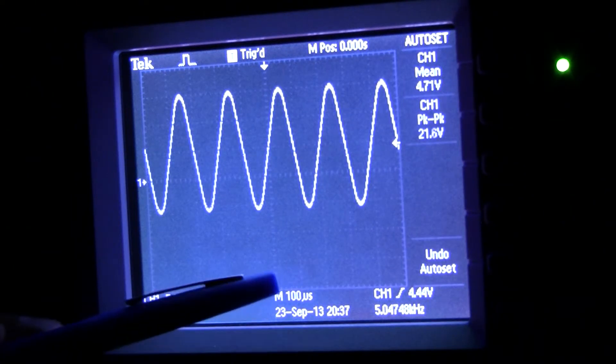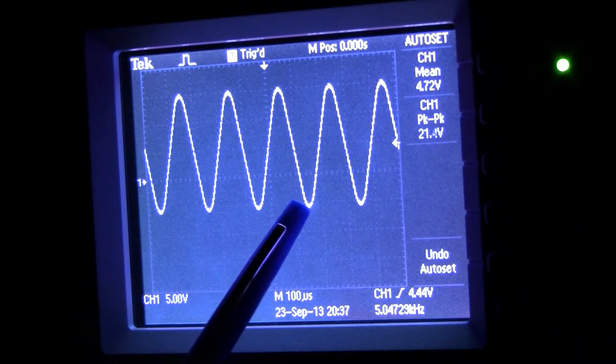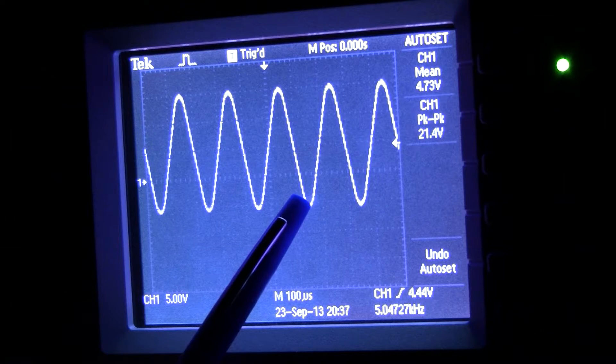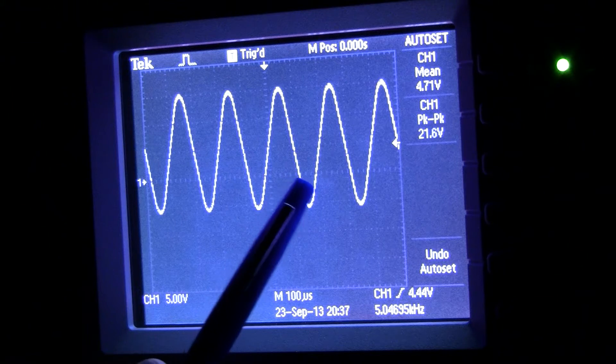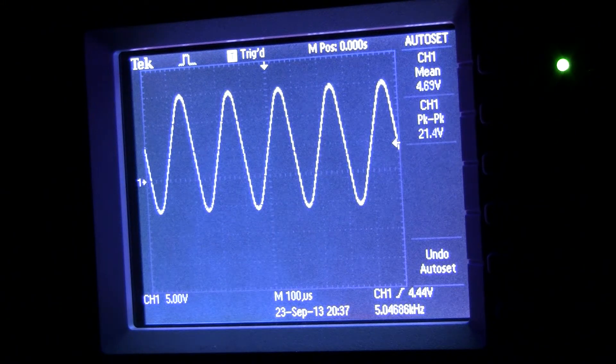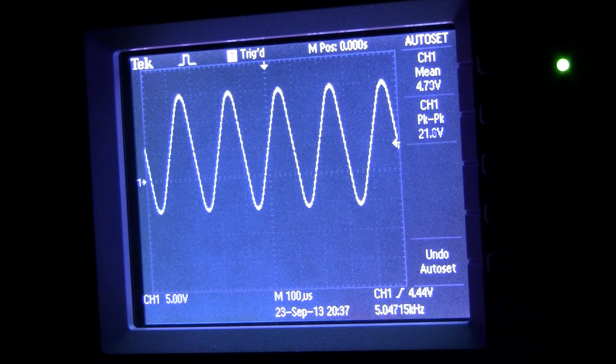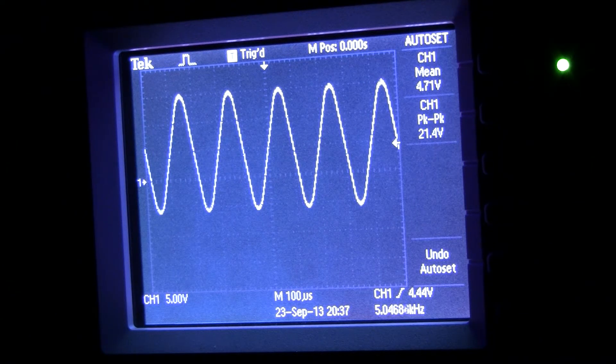One other thing is saying 100 microseconds. That's telling you the x-axis, the horizontal axis—each division from here to here is one division. So roughly this one cycle is about two divisions, or more or less 200 microseconds, which makes sense. If it's 5 kilohertz, then each period would be a couple hundred microseconds roughly.